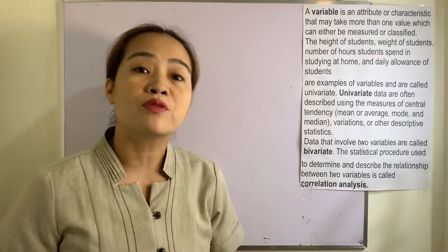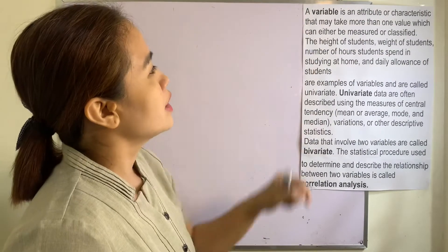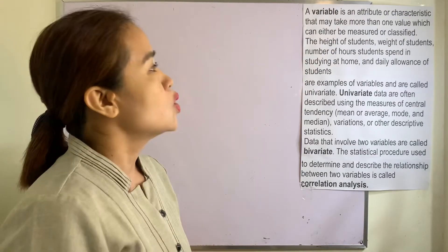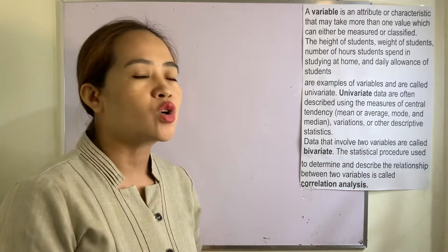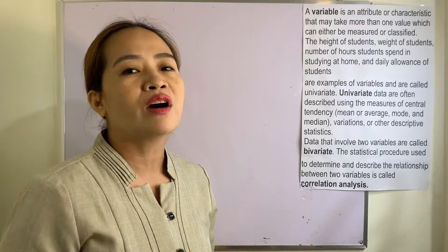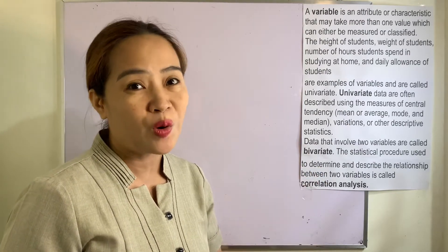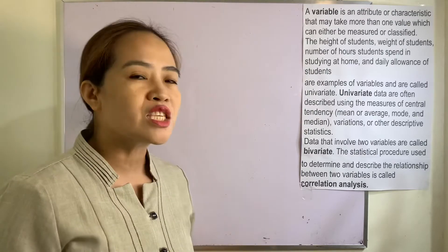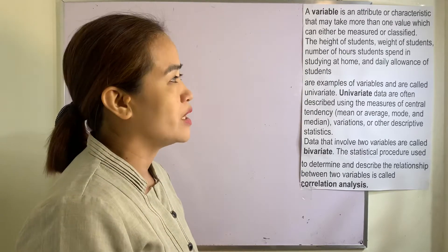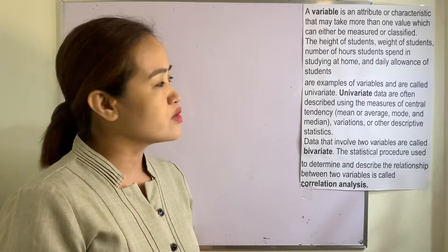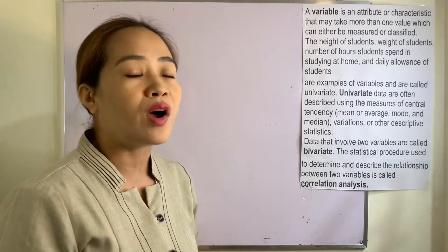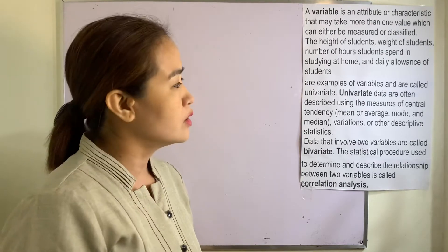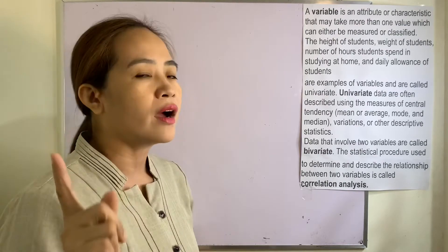Let us define first what a variable is. A variable is an attribute or characteristic that may take more than one value, which can either be measured or classified. The height of students, weight of students, number of hours students spend studying at home, and daily allowance of students are examples of variables and are called univariate.